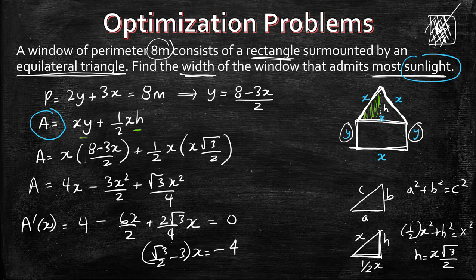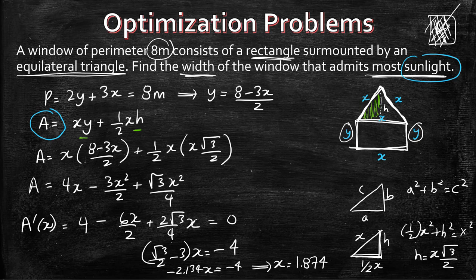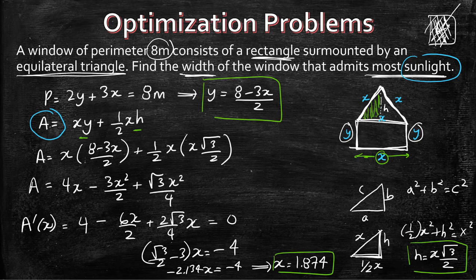You're going to get a denominator of approximately minus 2.134, so x equals minus 4 divided by minus 2.134, which gives x approximately equal to 1.874 meters. So now we have the width of our window. You could also substitute that x back into h and y to find the triangle height and rectangle height, but the question asks for the width, so x suffices.